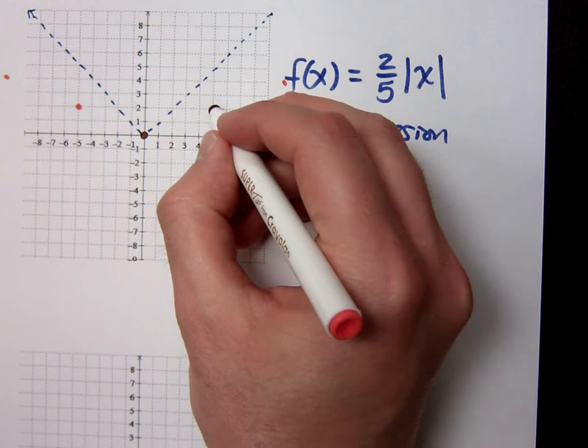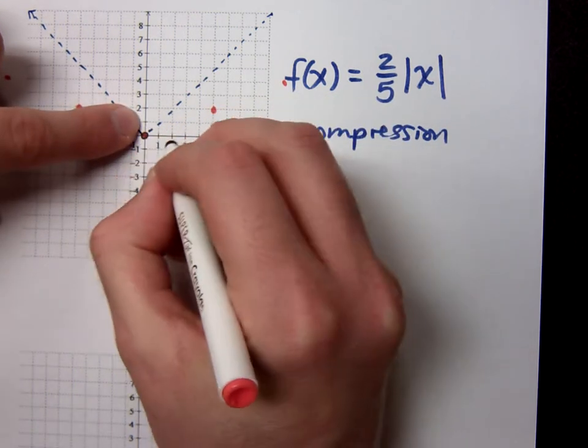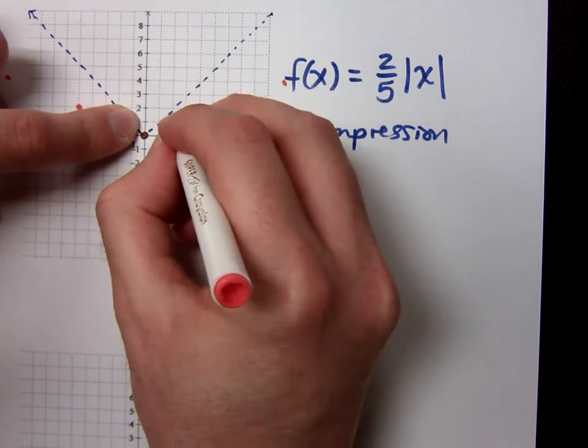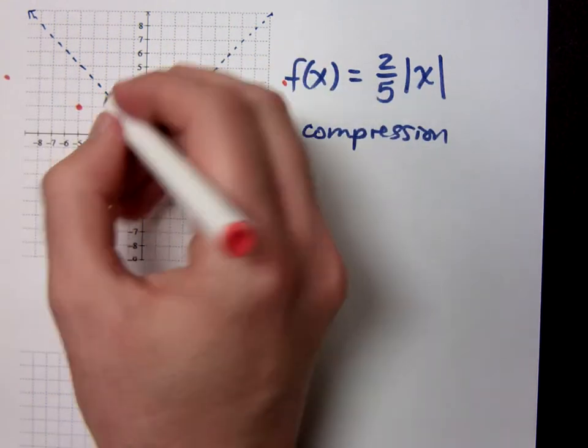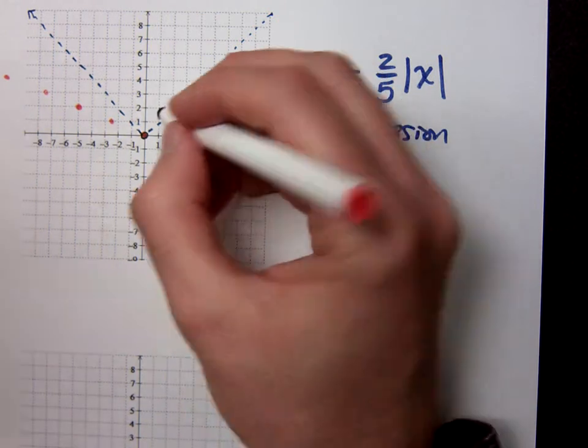If you do half of the change in x, so half of the change in x is 1, half of the change, excuse me, half of the change in y is 1, half of the change in x is 2½, so 1, 2½, 1, 2½. The more points you have, the more accurate you can be with your graph.